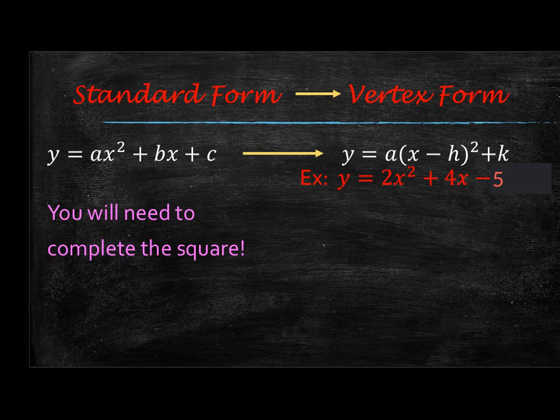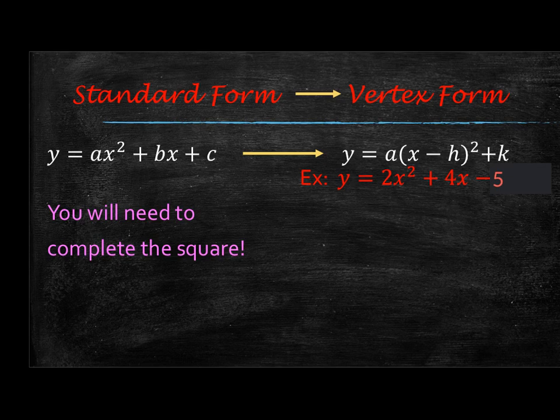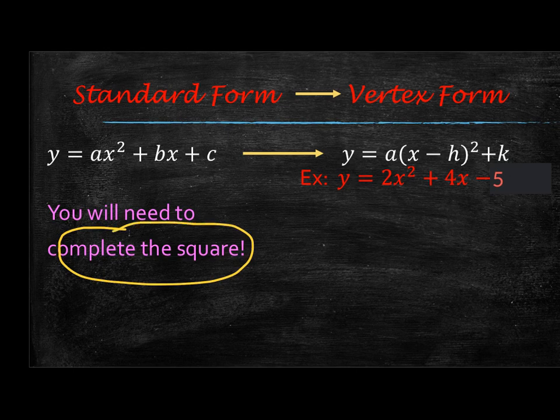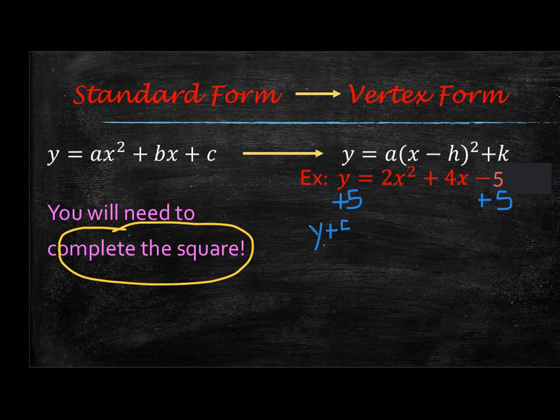The next type is going from standard form to vertex form. And so what you're going to have to do here is you are going to have to complete the square. So let's go ahead and get started on this one. So completing the square, the first thing that you'd want to do is you want to add the c over to the other side, so plus 5 plus 5. So then you'll have y plus 5 equals 2x squared plus 4x.